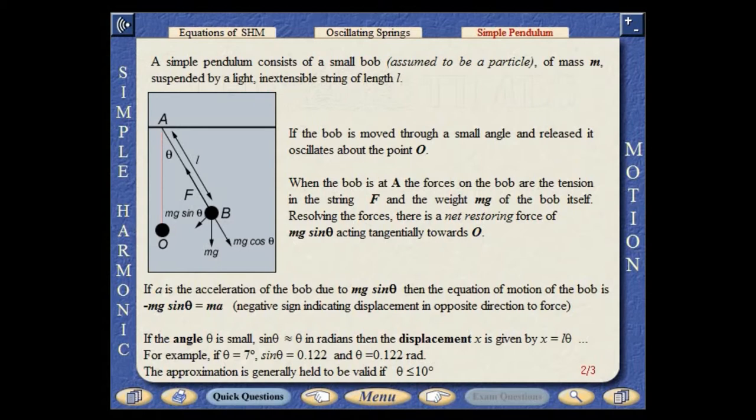When the bob is at point A, the forces on the bob are the tension in the string and the weight of the bob itself. Resolving the forces, there is a net restoring force acting tangentially towards O. If the angle theta is small, theta in radians is very nearly equal to the sine of theta.